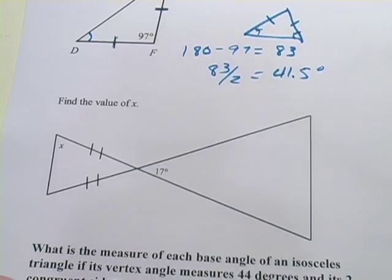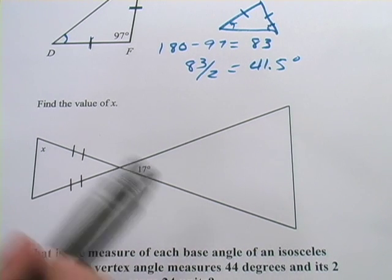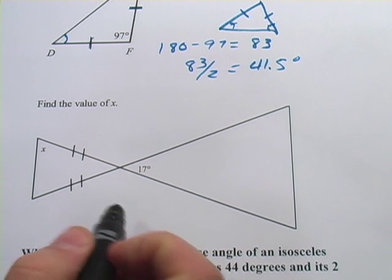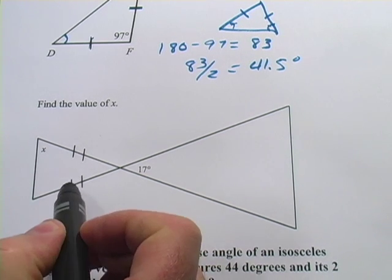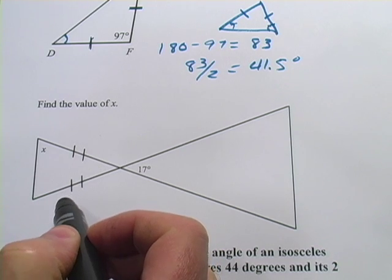Let's look at another one. This one says find the value of X in this figure here. And we've got this weird looking kind of lopsided bow tie thing going on. And we're told that this is an isosceles triangle. These double hash marks just mean the same thing, that this side is the same length as this side.